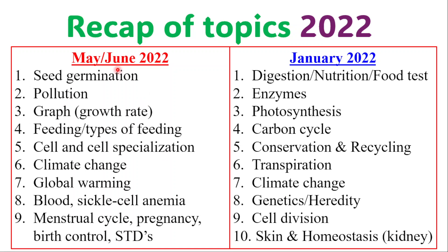On the May/June 2022 examination, topics and questions included seed germination, pollution, and a graph question specifically on growth and growth rate. Feeding was also covered, including types of feeding — we talk about autotrophs, heterotrophs, and saprophytes. Also cell and cell specialization, climate change, global warming, blood and sickle cell anemia specifically. The menstrual cycle was mentioned in a question, as well as pregnancy, birth control, and STDs or STIs.